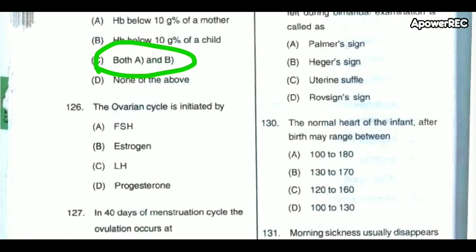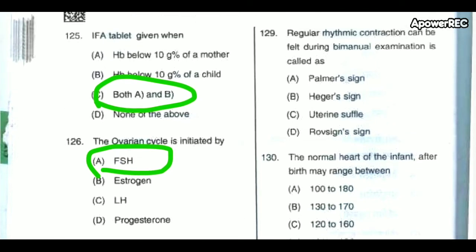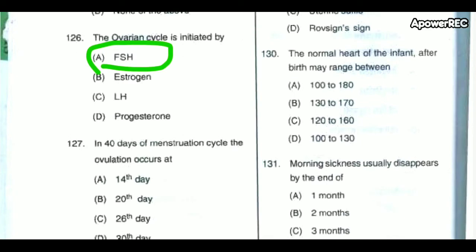The ovarian cycle is initiated by FSH — follicle stimulating hormone — which is a gonadotropin. Regular rhythmic contractions that can be felt during bimanual examination are called Palmar sign. The normal heart rate of an infant after birth may range between 120 to 160 beats per minute.